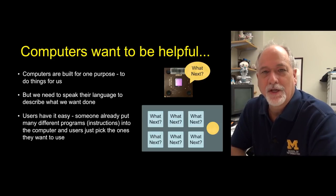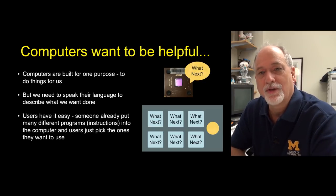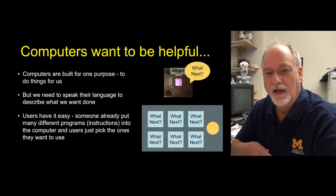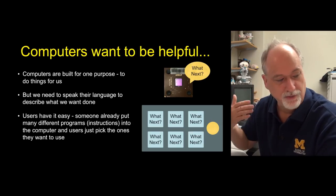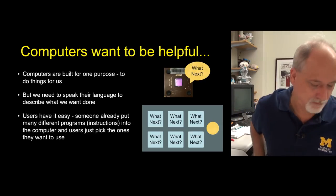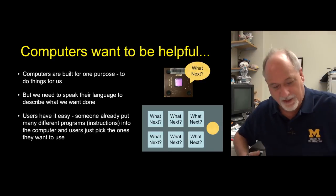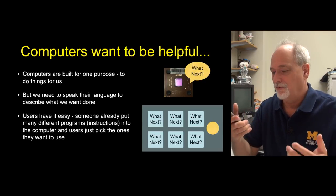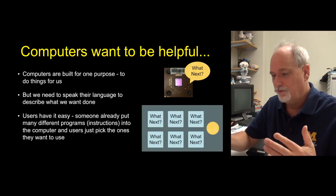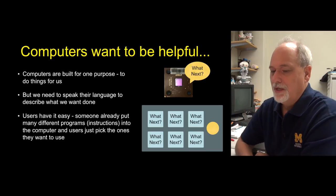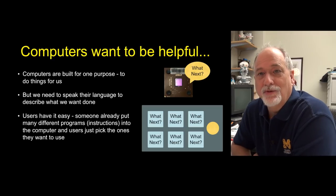The first thing to understand is that the purpose of learning to program is because computers want to do things for us. They are built and designed so that they basically ask us, what do you want to do next? If you grab your phone, it does nothing until you tell it what to do. It waits for you, and all the computer technology around you is generally waiting for you. And we can use this for useful things.